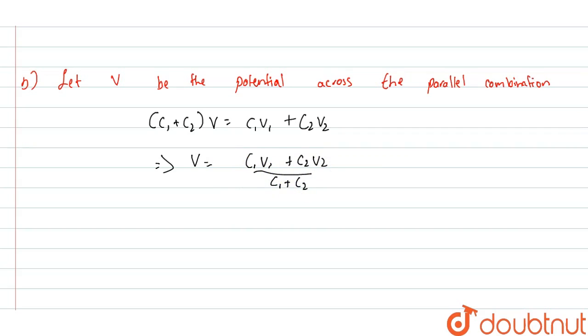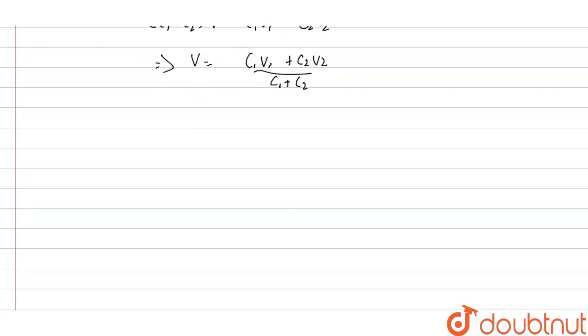Why do we need this? We need this to find the total energy after they are connected. The total energy stored in the parallel combination is given by: total energy capital E is equal to half times the effective capacitance C and the potential V squared.